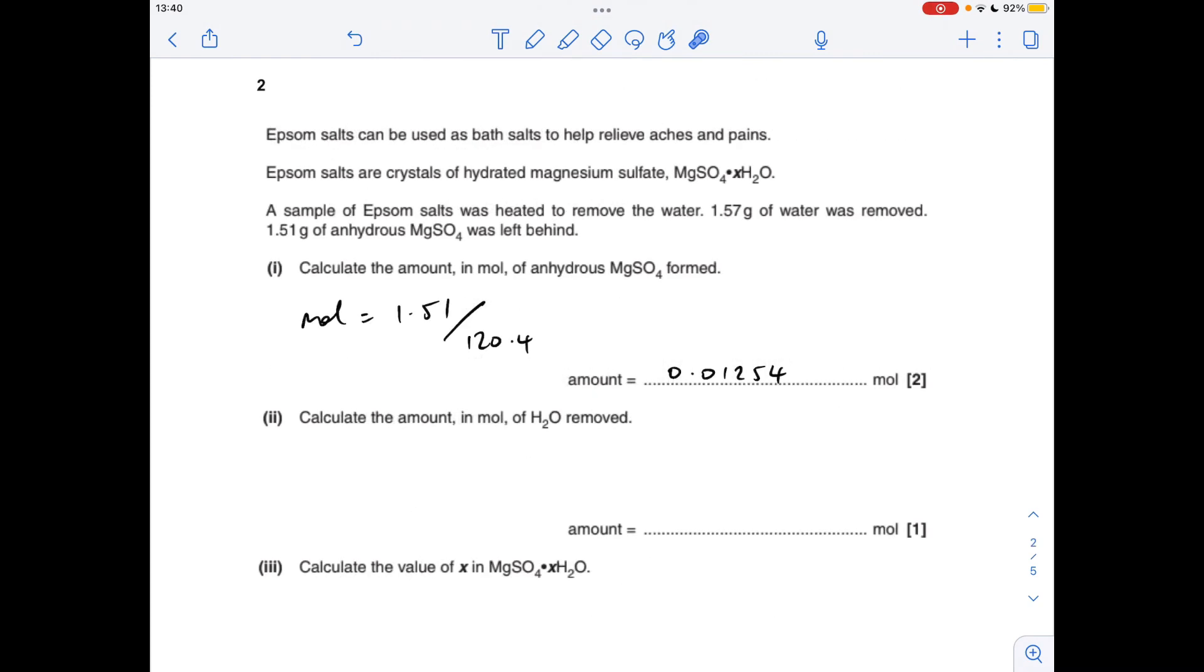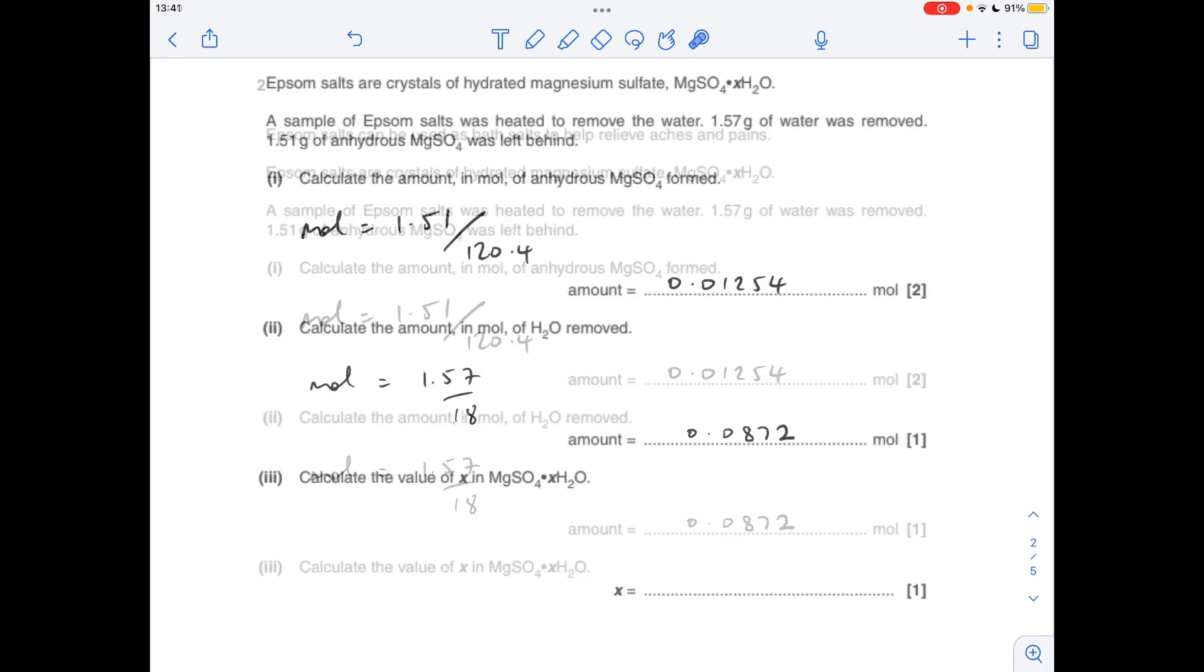Question two now: how many moles of anhydrous magnesium sulfate have formed? So it's obviously mass over MR: 0.01254. Another mass over MR calculation to get the moles of water, so it's 1.57 over 18: 0.0872.